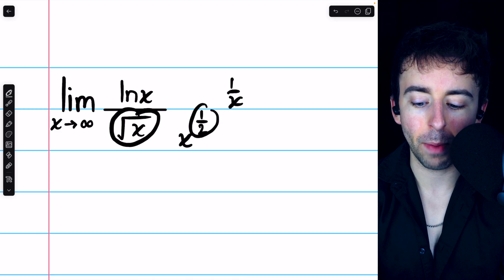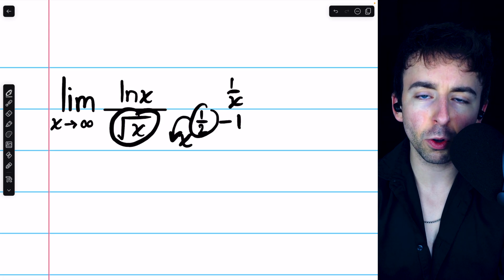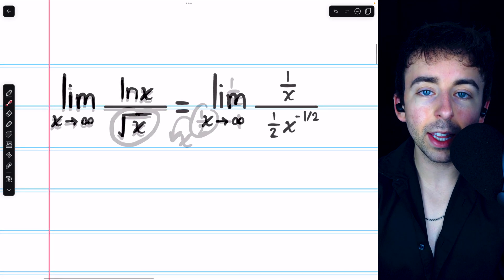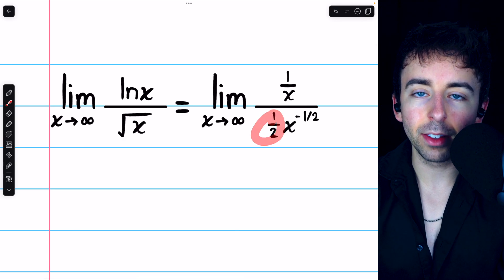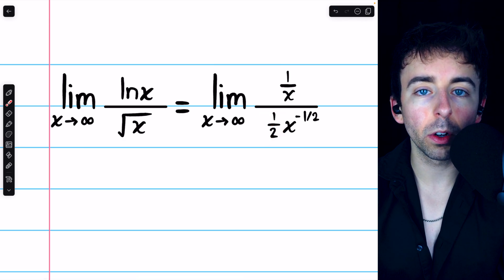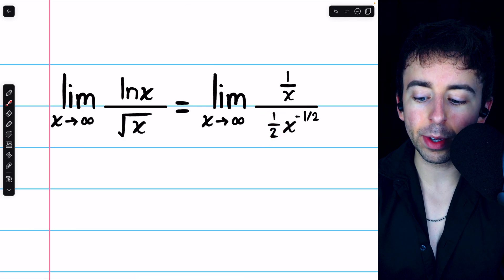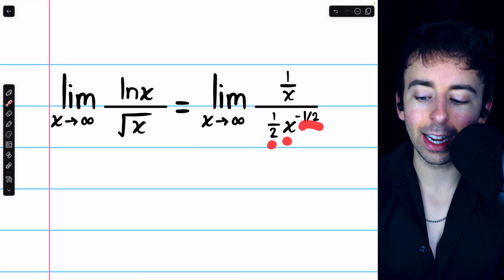Thus, we would bring the power of 1 half down as a factor and subtract 1 from the power. Bringing that 1 half down as a factor and subtracting 1 from the power of 1 half, the derivative we find is 1 half x to the negative half.